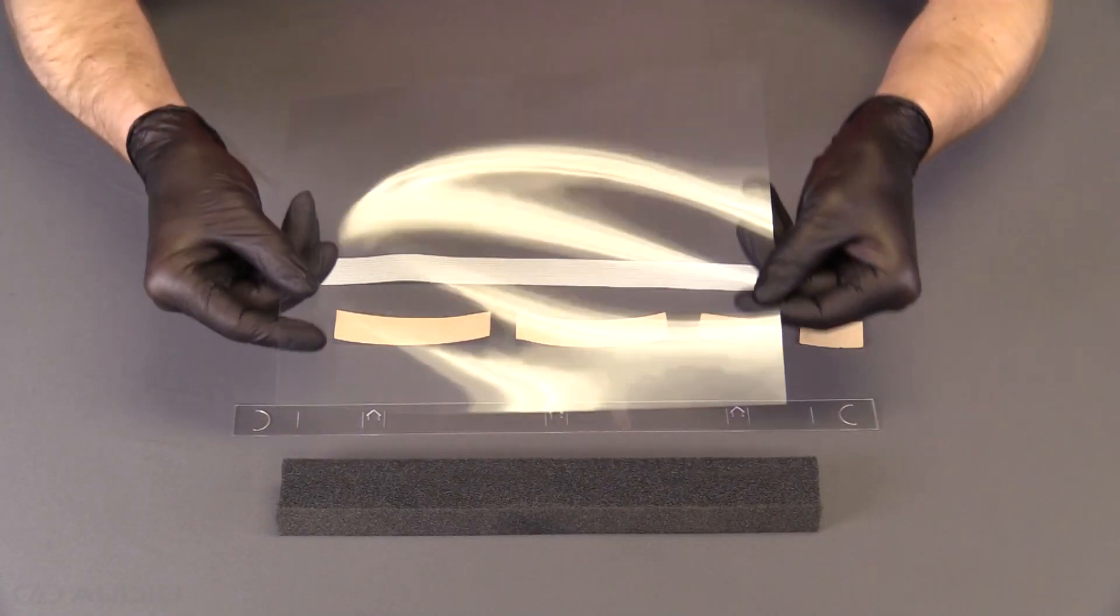It goes on like that. And so that face shield is made of five really simple parts.